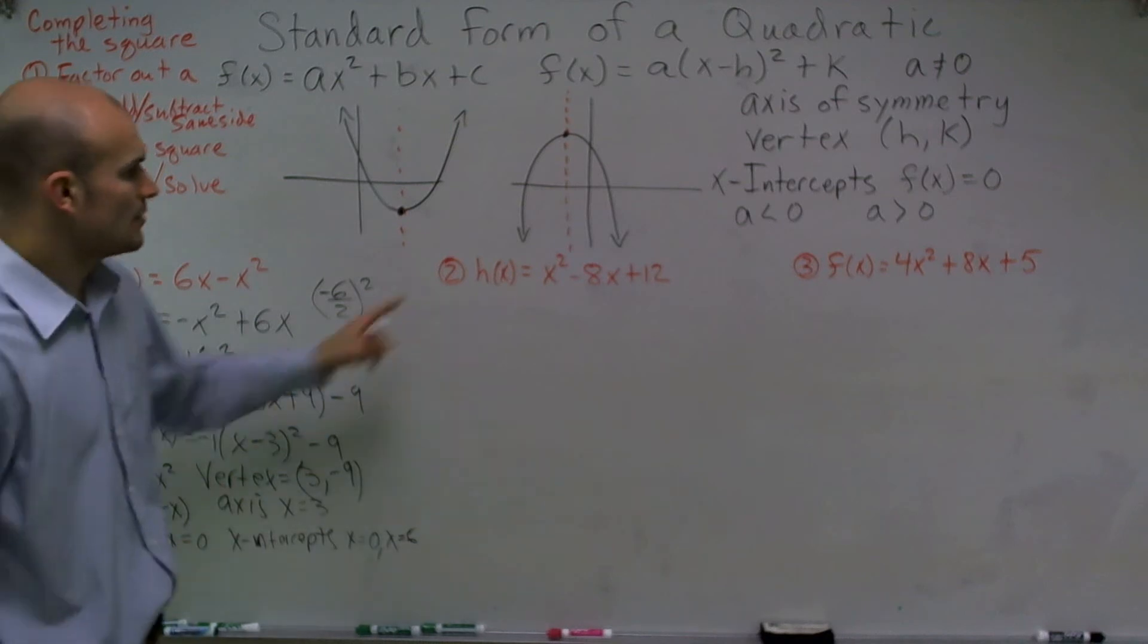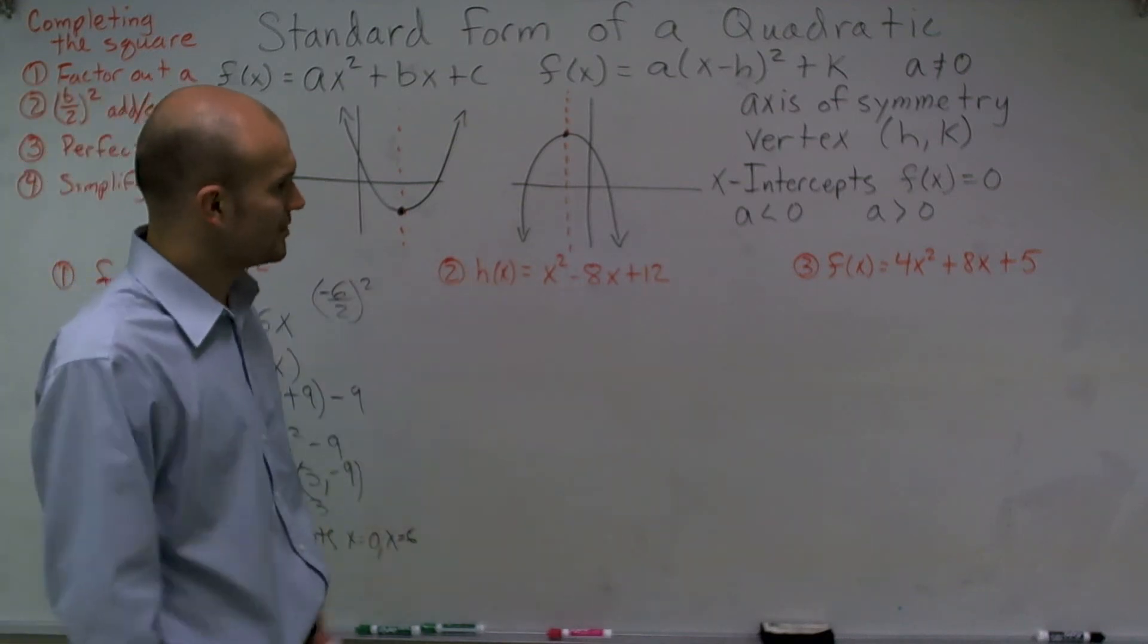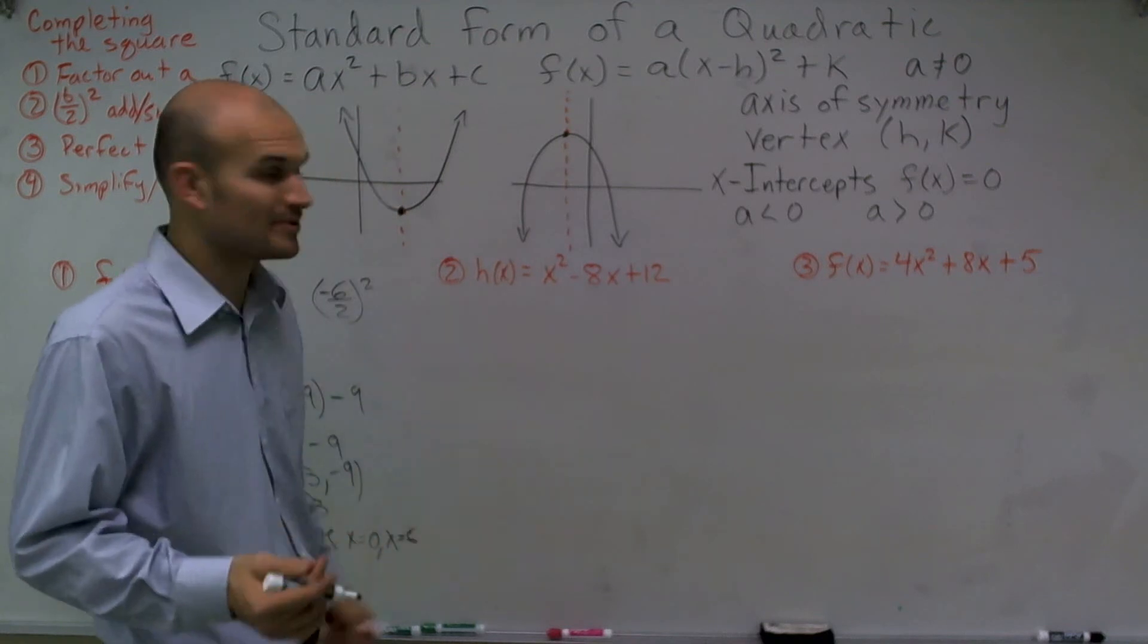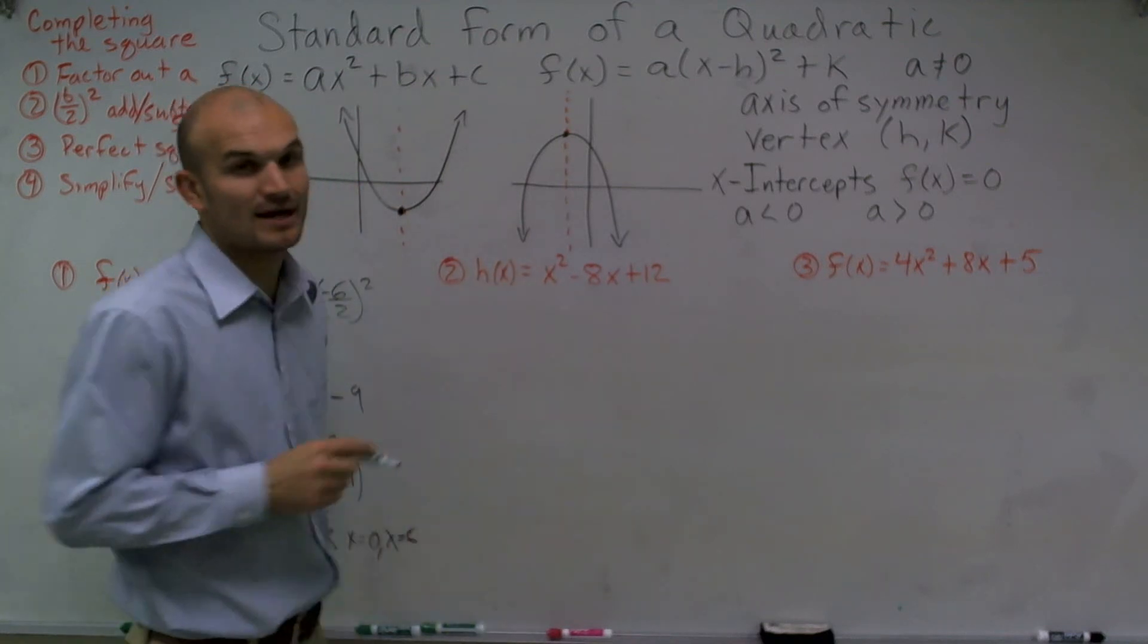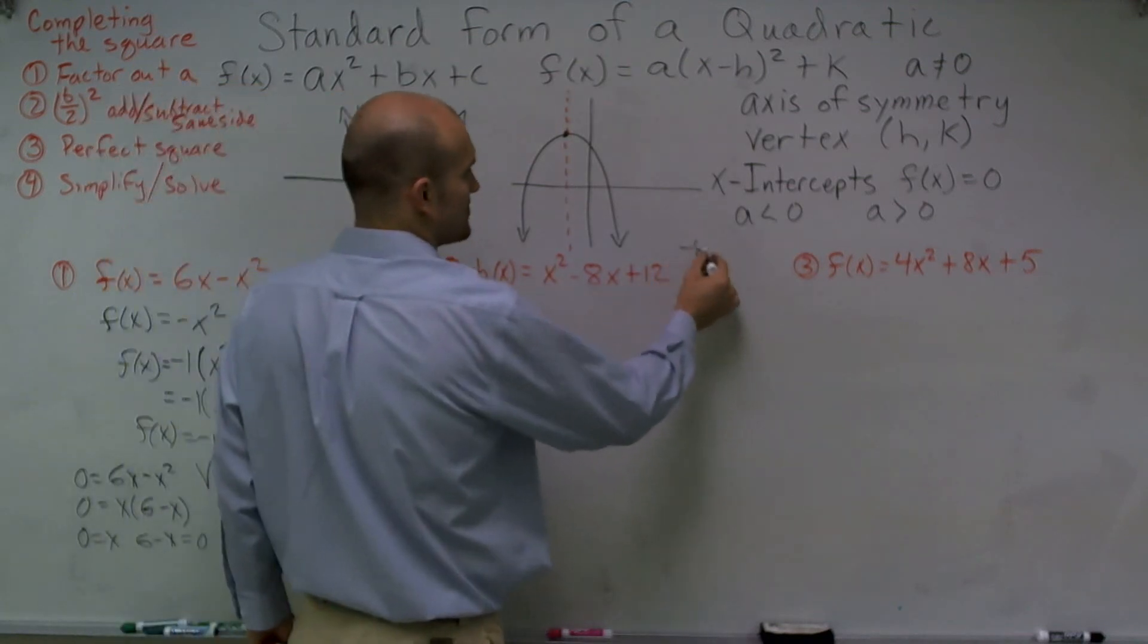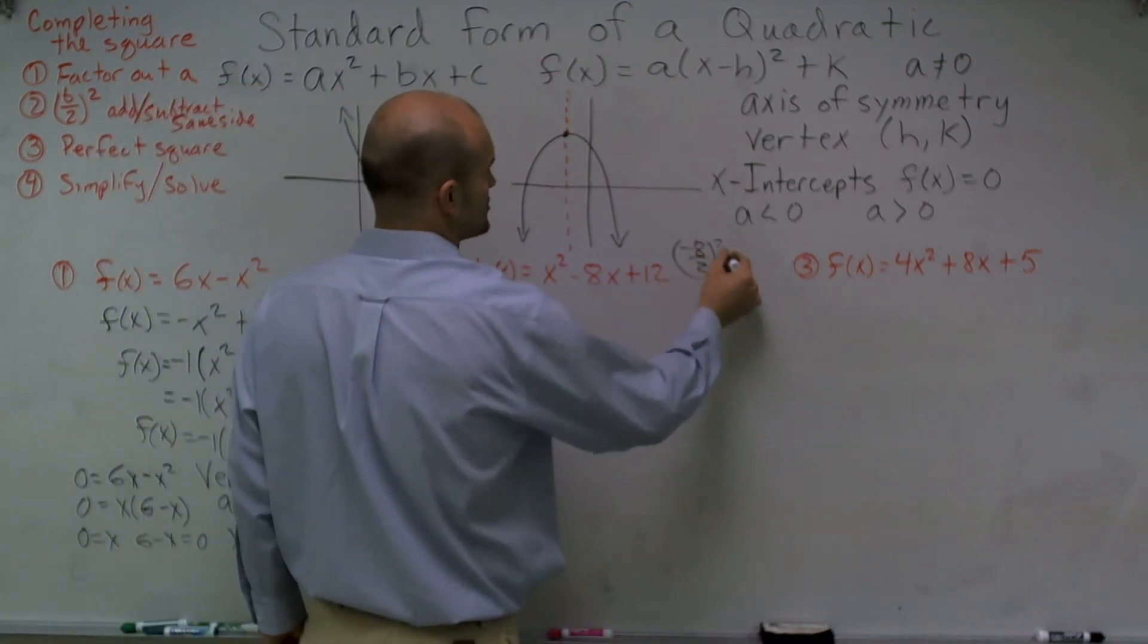All right, for number 2, again, let's go ahead and use our completing the square. I don't need to factor out a negative 1 or a 1 because my a is 1. So now all I need to do is take negative 8 divided by 2 and square it.